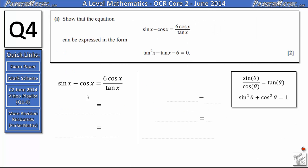So part 1, starting with sin x - cos x = (6 cos x)/(tan x), we need to write it in terms of just tan and tan squared. In order to do that we're going to use the two identities: sin θ/cos θ = tan θ and sin²θ + cos²θ = 1. At the moment there aren't any sine squares or cosine squares in this equation so we're going to look for somewhere where we can get sin x over cos x. So the first thing I'm going to do is divide both sides of the equation by cos x.